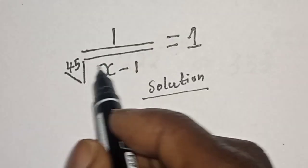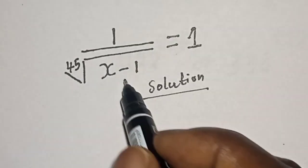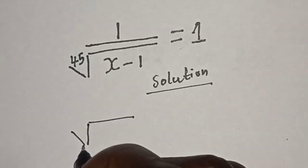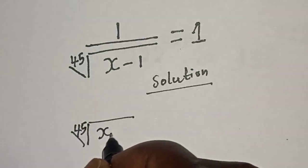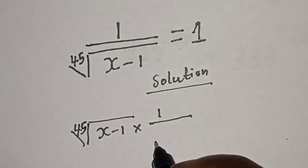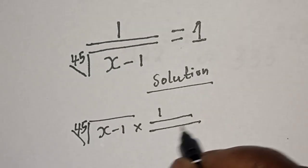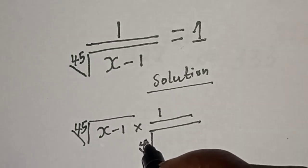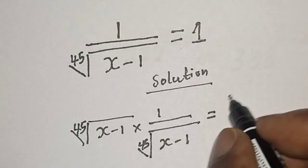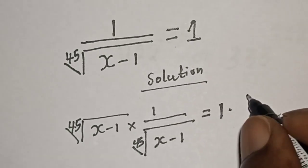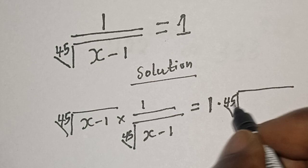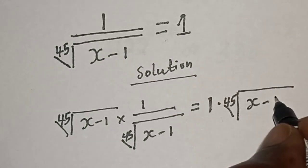Then, let's multiply both sides of the equation by 45 root of s minus 1. That is, 45 root of x minus 1 multiplied by 1 over 45 root of x minus 1 is equal to 1 multiplied by 45 root of x minus 1.